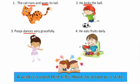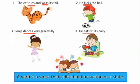The next sentence is: 'He eats fruits daily.' Voh pratedin fruits khata hai. To action kya ho raha hai? Khaane ka action ho raha hai — 'eats'. So we'll underline the word 'eats'. To kya kya verbs ho gayi isme? Kya kya action words hain? Runs, wags, kicks, dances, and eats.